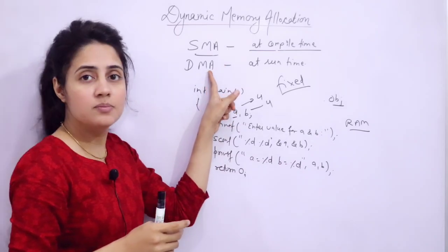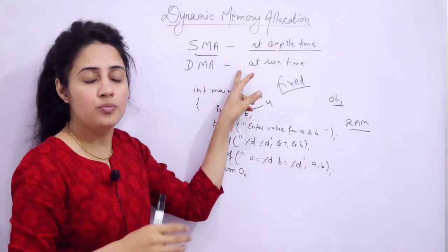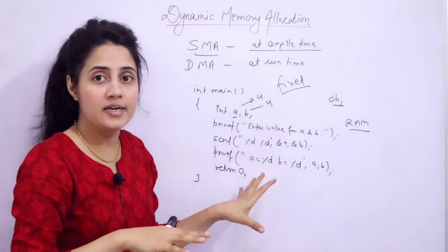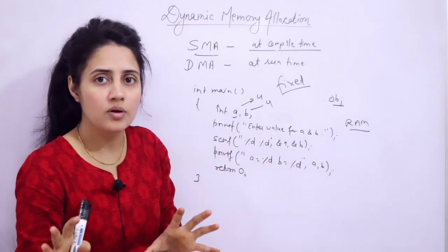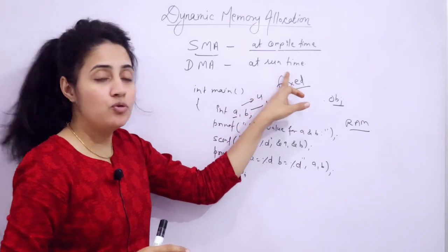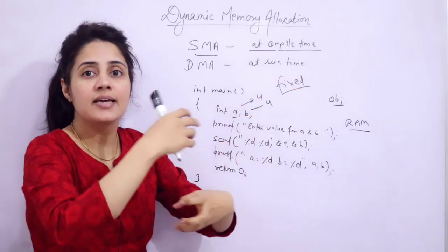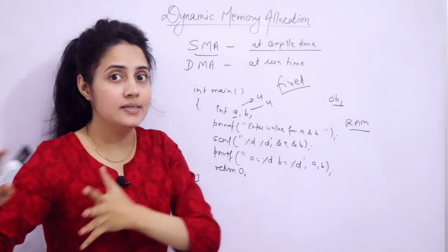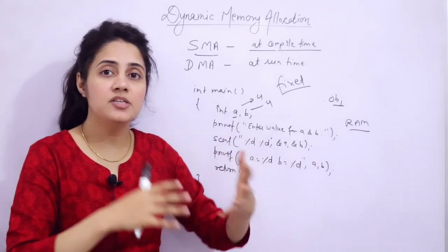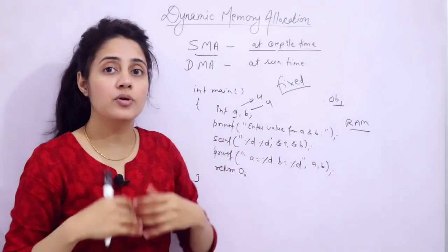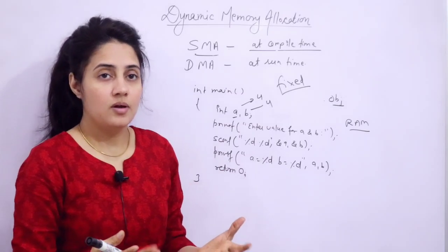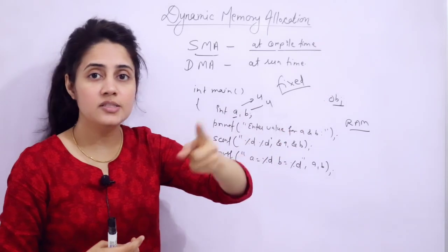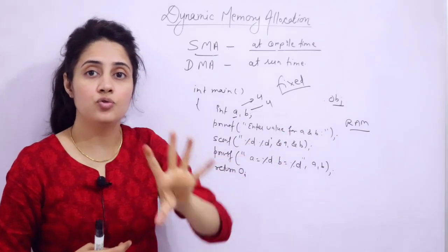Dynamic memory allocation means memory would be allocated at runtime, and it is not fixed at compile time. At runtime, the memory would be allocated and that can be modified according to your programming needs. You can increase or decrease the memory space according to your programming needs. But in static memory allocation, at runtime you cannot increase or decrease the memory which has been allocated to you.